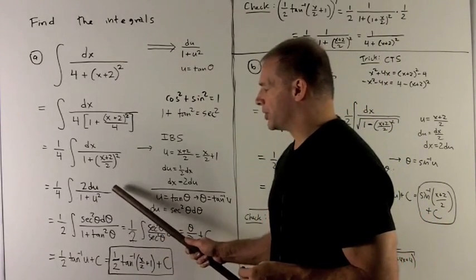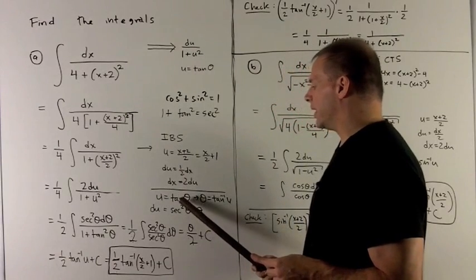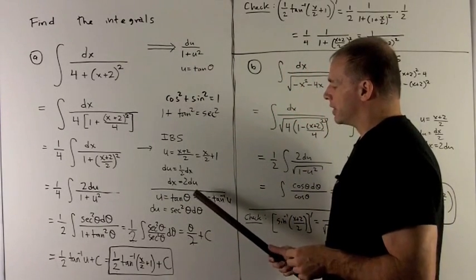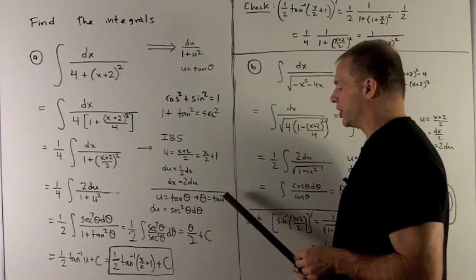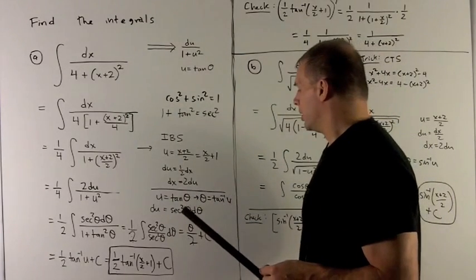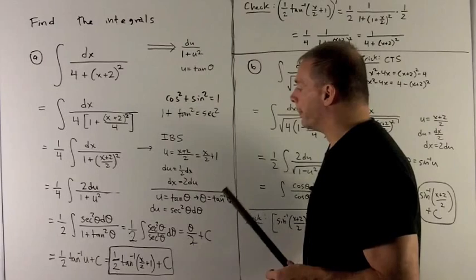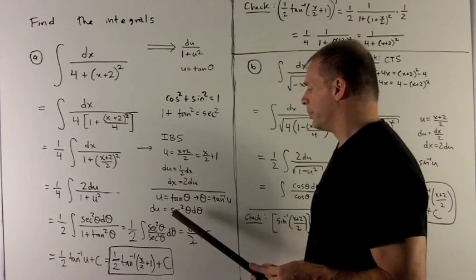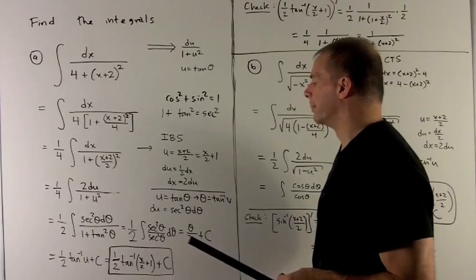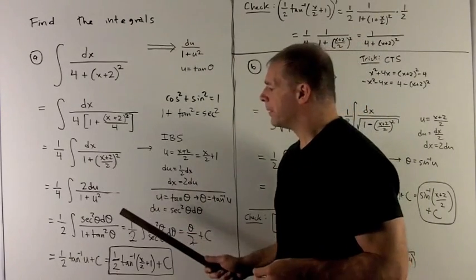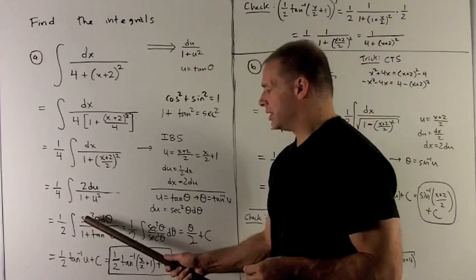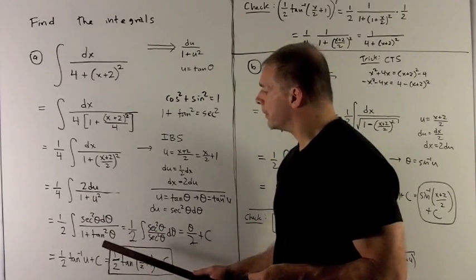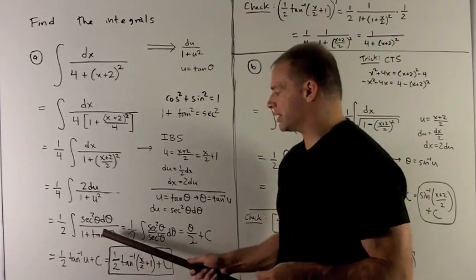So we proceed here by letting u be equal to tangent theta. This is the same as saying theta is equal to inverse tangent of u. We'll do this for later on. Du is then equal to the derivative tangent with respect to theta, which is secant squared theta d theta. I put everything in. The top becomes secant squared theta d theta. And note the 2 canceled with the 4 to give me a half. And the bottom I have 1 plus tan squared theta.